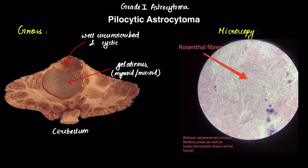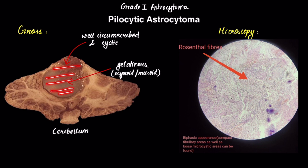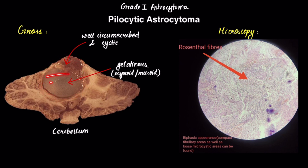You can look at the tumor right here in the cerebellum. It is well circumscribed — that is, it has a well-defined border — and inside the tumor there is a gelatinous mass, that is, it is myxoid and mucoid. So this is the gross feature of pilocytic astrocytoma: it mostly occurs in children, most commonly in the cerebellum, and grossly it is well circumscribed with a well-defined border and gelatinous mass inside.